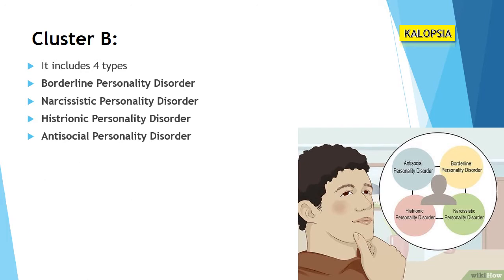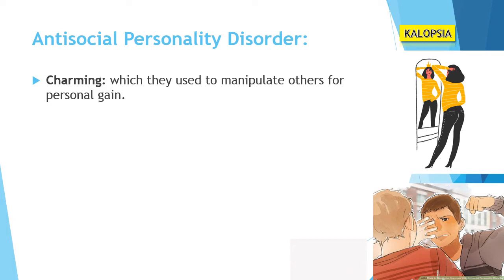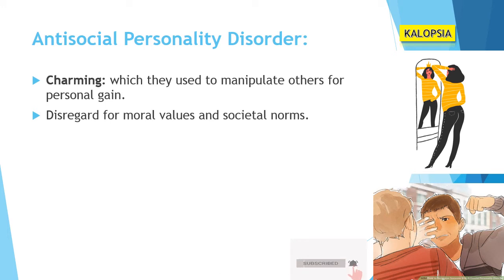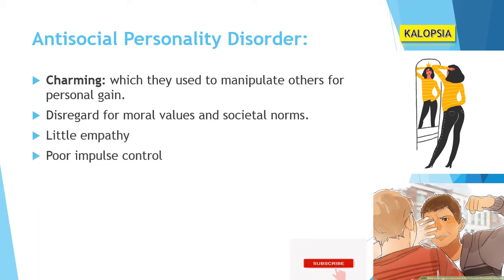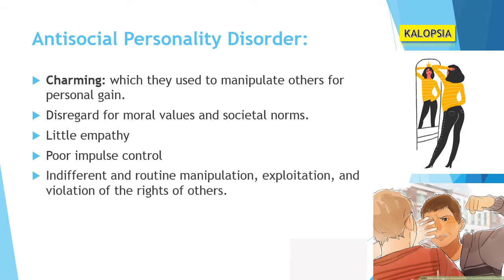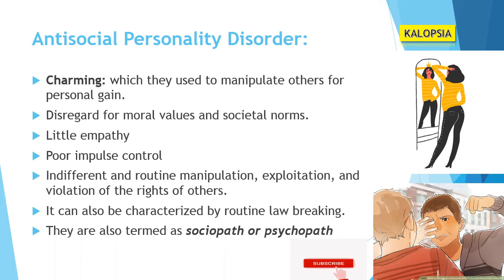Let's see antisocial personality disorder in detail. People with antisocial personality disorder are charming, which they use to manipulate others for personal gain. They have disregard for moral values and societal norms, little empathy, and poor impulse control. They are indifferent and engage in routine manipulation, exploitation, and violation of the rights of others.